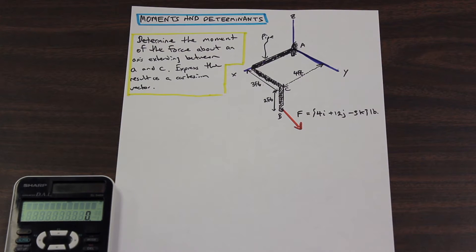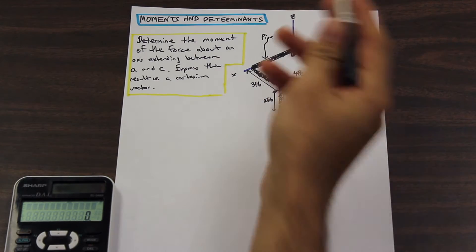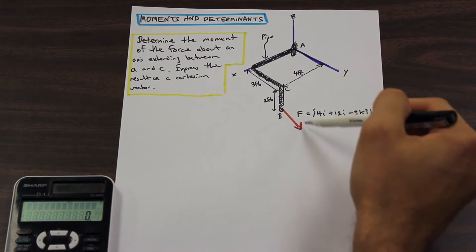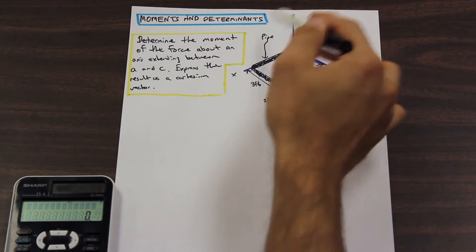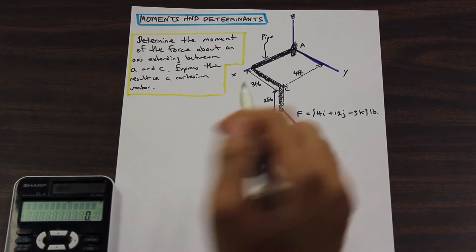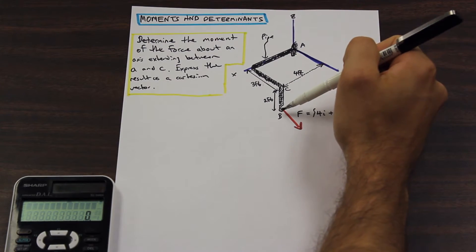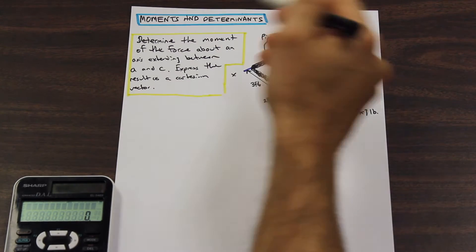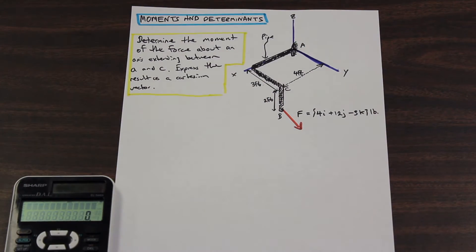The question here could come in different forms. They could ask you to, for example, find the resultant force on the x, y, and z axis from the force, or the resultant moment on the axes. In this question, we're asked to find the resultant moment of the force on a specific axis, and we're asked to express that result as a Cartesian vector.